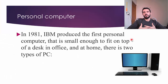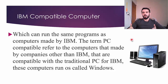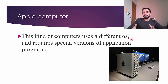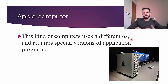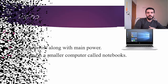Hardware includes different types of computers. Personal computers come in two types: IBM-compatible computers, which are normal desktops running Windows, and Apple computers — called Macintosh — which use the Mac operating system. Similarly, in mobile we have Android and Apple's iOS. We also have laptops, which are small, portable, battery-powered, and smaller than desktops.